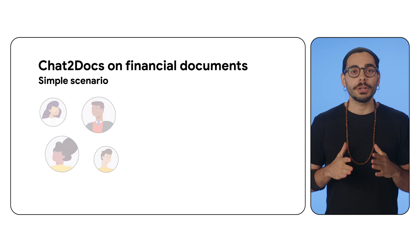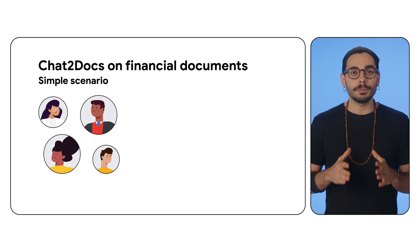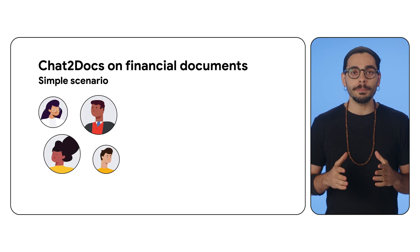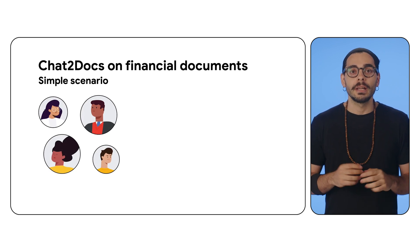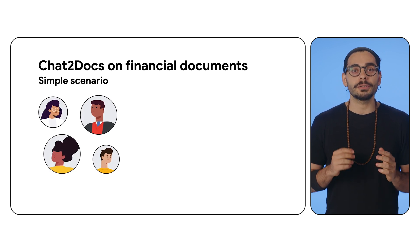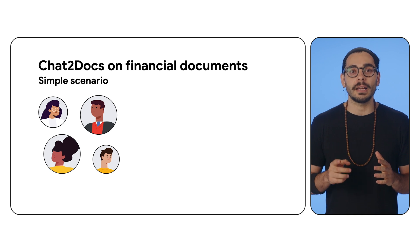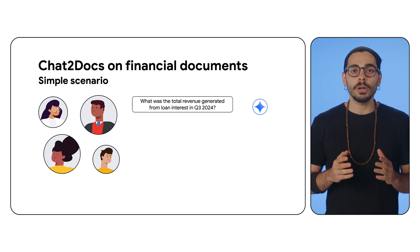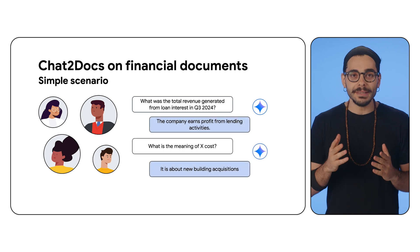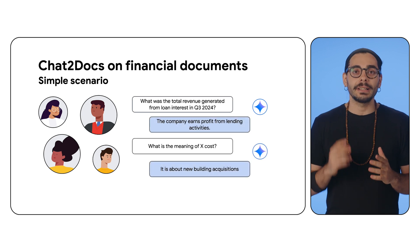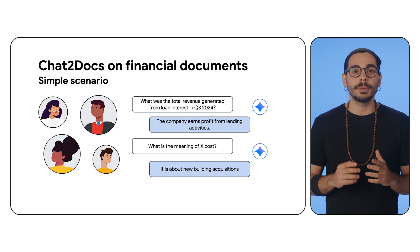Imagine a scenario where a user needs information about a company's financial performance. A well-built chat-to-docs application lets them ask questions like 'What was Q3 2024 net interest revenue?' and get precise answers directly from the documents using an LLM.